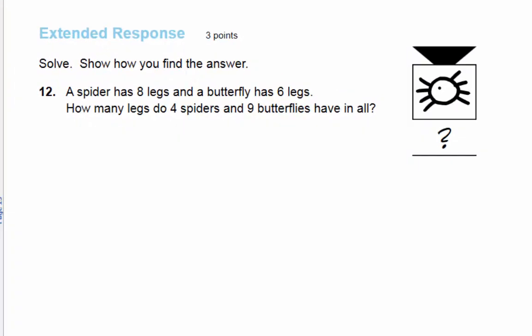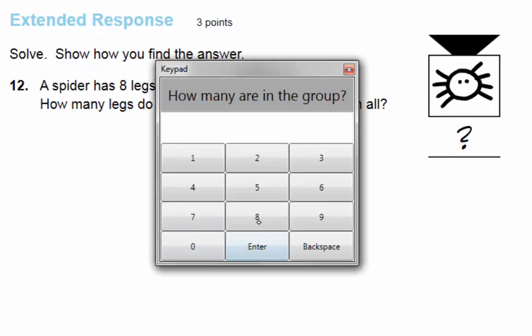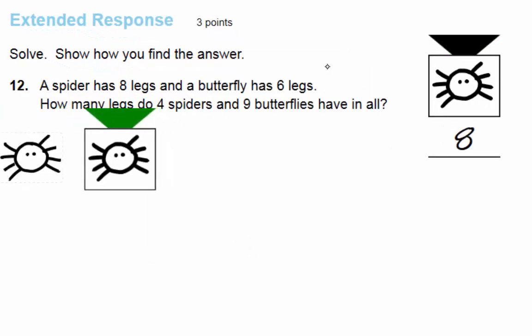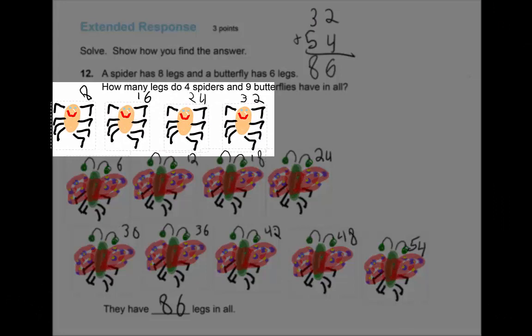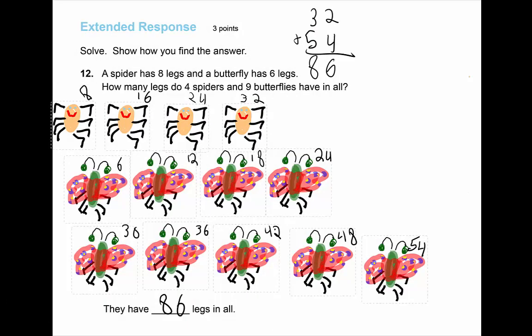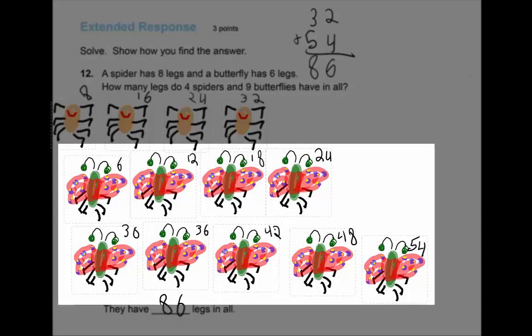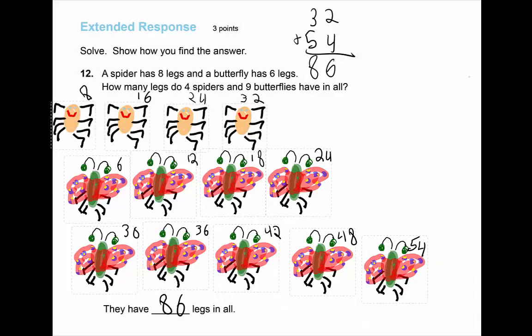For this problem, students create a stamp, enter the number of objects that it represents, and make copies by dragging on the stamp handle. This student drew a spider with 8 legs and stamped 4 copies. Then she drew a butterfly with 6 legs and stamped 9 copies. She skip counted to find the answer.